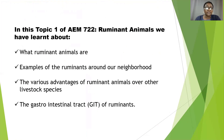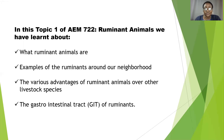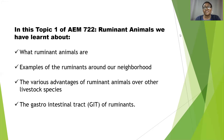We are coming to the end of the first topic in AEM 722 Ruminant Animals. In summary, we have defined what ruminant animals are, given examples of animals that exist within our neighborhood, discussed the advantages of ruminant animals over other livestock species, and shown the gastrointestinal tract — also referred to as the GIT — of ruminants and how it differs from other classes of livestock. Thank you for attending this class; until next time in AEM 722 Ruminant Animals, goodbye from your facilitator, Brice Docton.